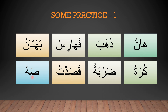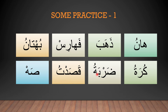Also notice: when Ta marbuta comes at the end, it looks like Ha without dots — that's the only difference. It can look like this or like this, and it only comes at the end of the word. Just like Ha can be in different forms without dots, Ta marbuta can similarly appear in those shapes but with dots. So whenever something that looks like Ha at the end of the word has dots, we know it's Ta marbuta.